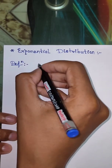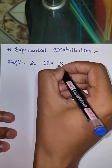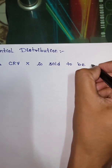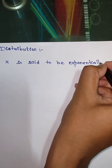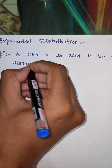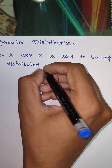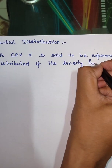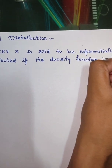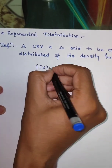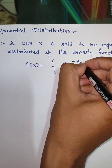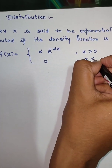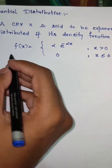The exponential distribution is defined for the continuous random variable. A continuous random variable x is said to be exponentially distributed if its density function is defined as: f(x) = α·e^(−αx), for x greater than 0, and 0 for x less than or equal to 0. This is the definition of exponential distribution.